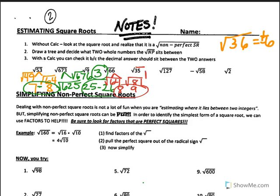The square root of 35 is between what two perfect squares? Between 25 and 36. So the answer for the square root of 35 is between 5 and 6.